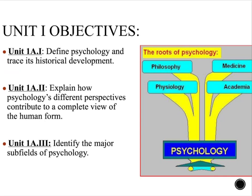I'm going to go ahead and give you a little overview of Unit 1 objectives. Units are going to be broken down into subunits. In Unit 1, you can see we have three subunits. We have Unit 1A.1, which is our unit today, where we'll be focusing on defining psychology and tracing its historical development. Tomorrow, in Unit 1A.2, we'll explain how psychology's different perspectives contribute to a complete view of the human form. And then in Unit 1A.3, we'll identify the major subfields of psychology.